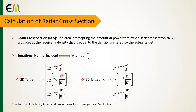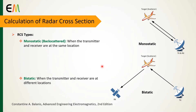These definitions all indicate that the two-dimensional and three-dimensional RCS of targets are defined under a plane wave, which in practice can only be approximated when the target is placed in the far field of the source.